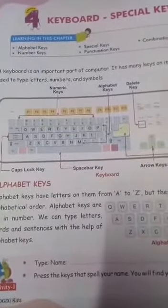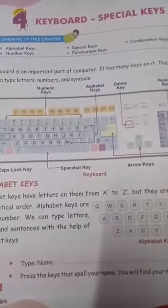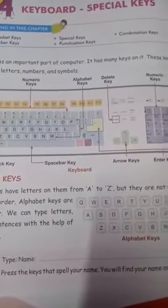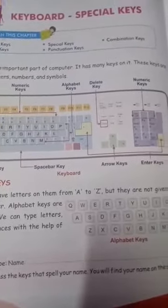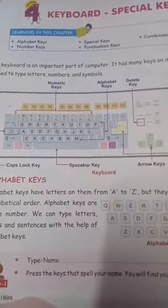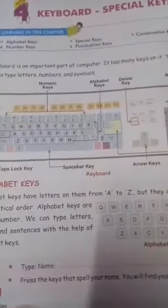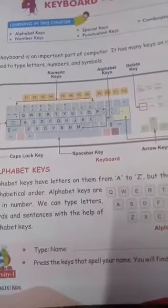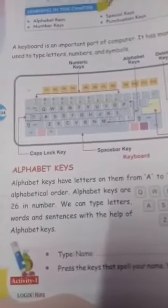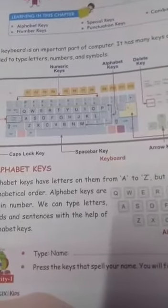Dear children, as you know that keyboard is an important part of a computer and it is an input device. It has got many buttons and those buttons are called keys. These keys are used to type letters, numbers and symbols. All of you open page number 34 and look at the picture of a keyboard. You can see the alphabet keys. Alphabets from A to Z are written but they are not in alphabetical order.